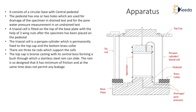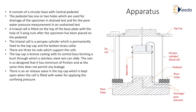The top cap is a brass casting with its central boss forming a bush through which a stainless steel ram can slide. The ram is designed to have minimum friction and at the same time it does not permit any leakage. This ram is used to apply vertical pressure on the soil specimen. There is an air release valve in the top cap which is kept open when the cell is filled with water for applying the confining pressure.